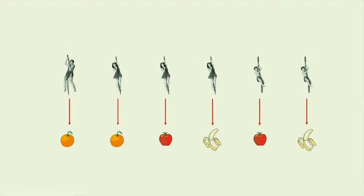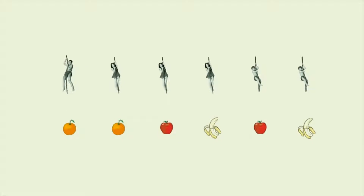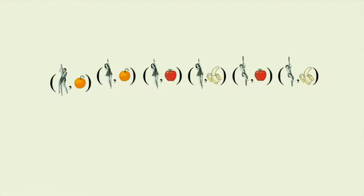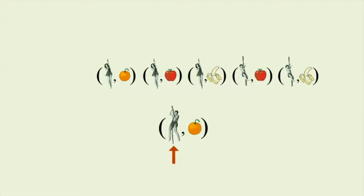Or, instead of drawing arrows, we could represent each association between a person and a fruit as an ordered pair. In each ordered pair, the first element is a person from set A, and the second element is one fruit from set B which that person likes. We call these pairs ordered since the two elements cannot be swapped without changing the meaning of the relation.